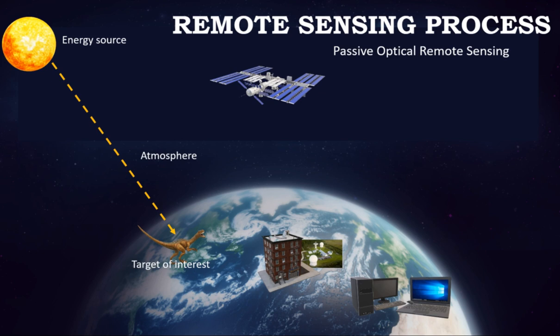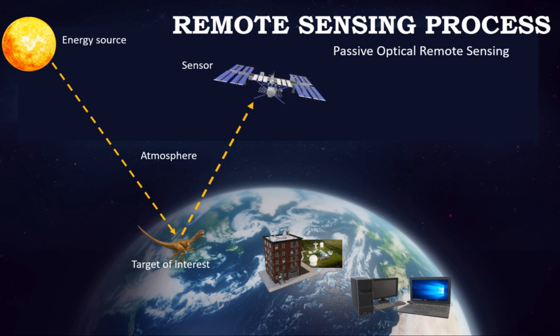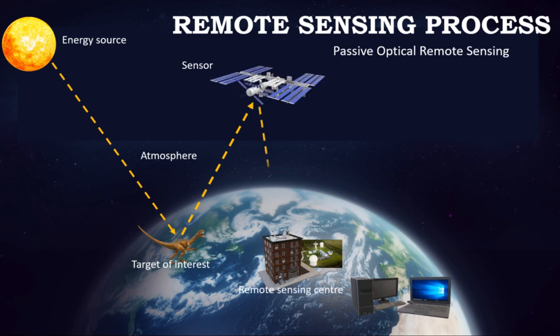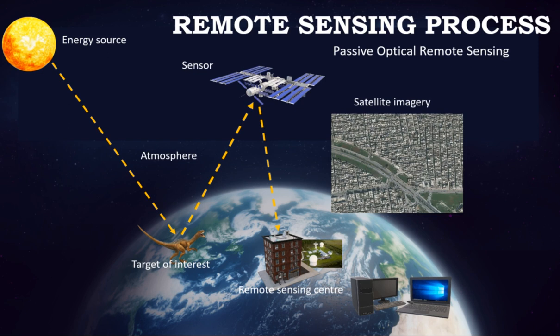As the reflected energy travels from the target to the sensing or imaging device, it interacts with the atmosphere once again. After the energy has been reflected by the target, a sensor — which is not in contact with the target — collects and records the electromagnetic radiation. The recorded energy is transmitted, often in electronic form, to a receiving and processing station on the ground, where it is processed into an image. The processed image is then interpreted visually, digitally, or electronically to extract information about the target. Finally, we apply the extracted information to better understand the target, reveal new information, or assist in solving a particular problem.